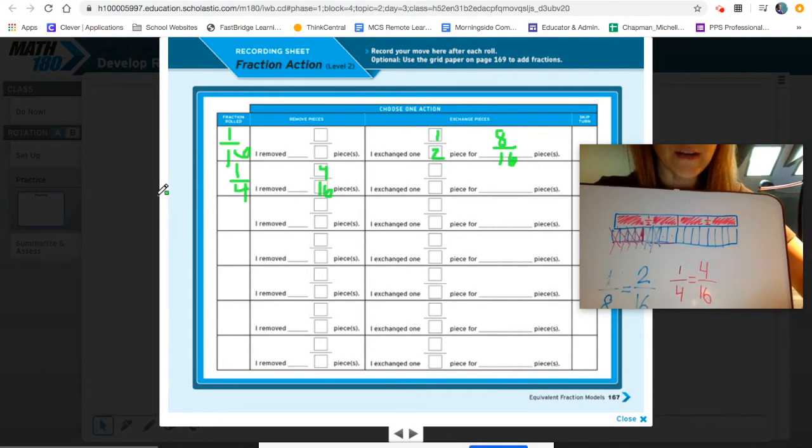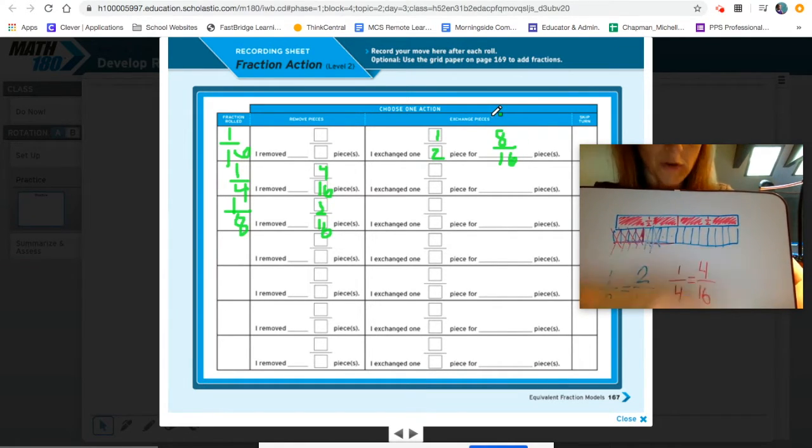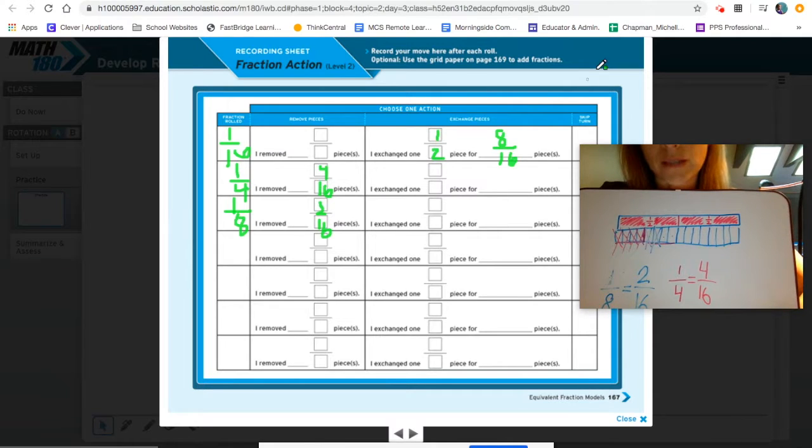And over here, I write that I had one eighth. So I removed two sixteenths size pieces. And my partner and I keep playing like this until one of us gets rid of all of our pieces and wins the game.